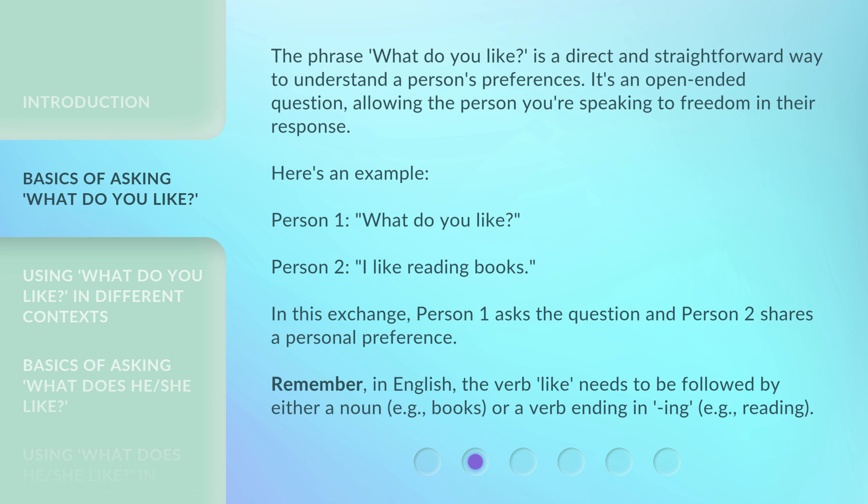The phrase 'What do you like?' is a direct and straightforward way to understand a person's preferences. It's an open-ended question, allowing the person you're speaking to freedom in their response. Here's an example — Person 1: 'What do you like?' Person 2: 'I like reading books.' Remember, in English, the verb 'like' needs to be followed by either a noun (e.g., books) or a verb ending in -ing (e.g., reading).